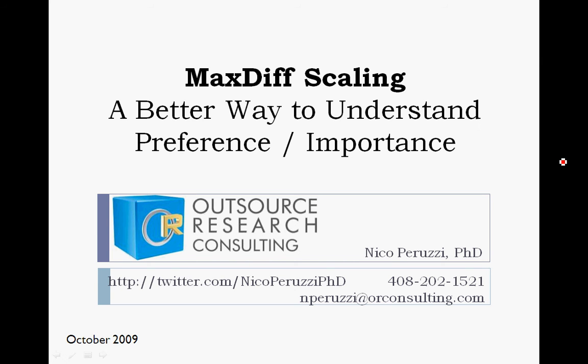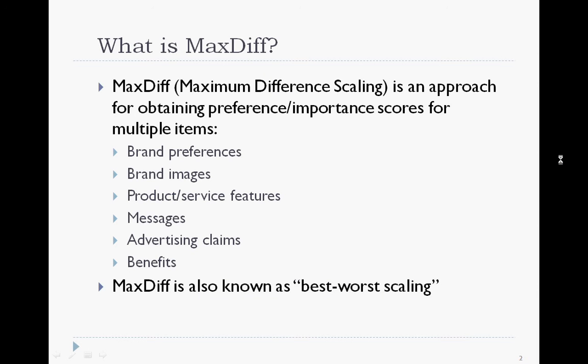Hi, my name is Nico Peruzzi with Outsource Research Consulting, and today I'm going to be talking with you about MaxDiff scaling, which is a better way to understand preference or importance. MaxDiff, known as Maximum Difference Scaling, is a way to look at preference or importance scores for a number of items. These could be brand preferences, images, features, messages, benefits, whatever they may be.